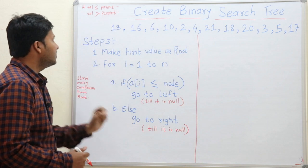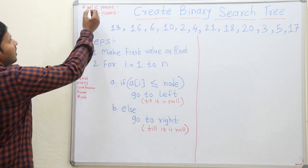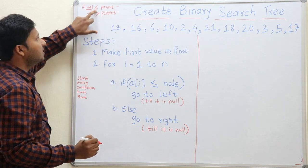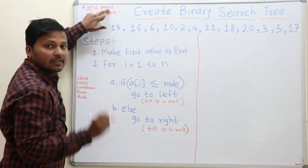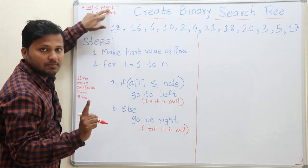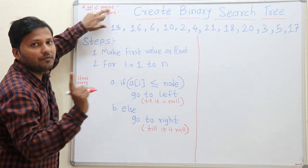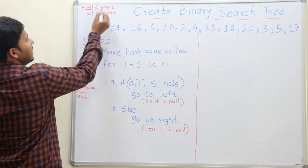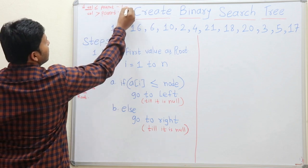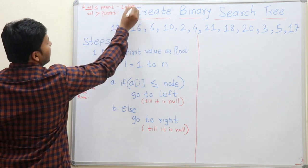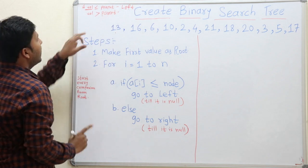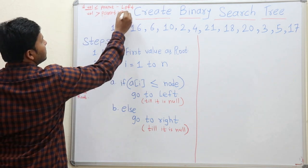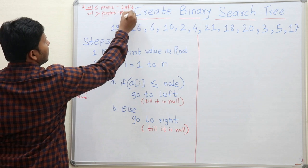In a binary search tree, if the value of the element is less than or equal to its parent, then that element becomes the left child of its parent. If the value is greater than the parent, then it becomes the right child.